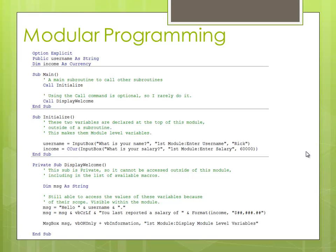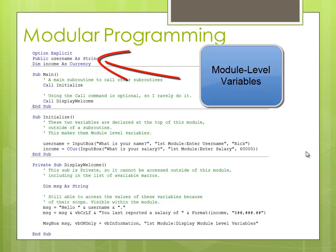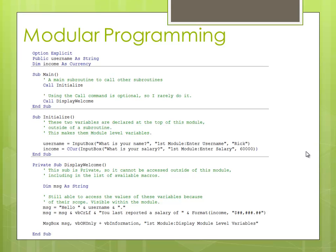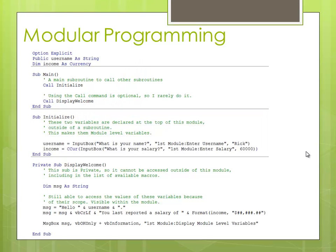You can see in this example where we use module-level variables to send information to different subroutines. I have a main subroutine that calls two other subroutines, and I also have indicated a private subroutine, which means it wouldn't be available on the Alt-F8 list and could not be run anywhere else except from within this module. The subroutine initialize sets the variables that we need, and then the subroutine called display welcome gets called by the main subroutine and will display those values.